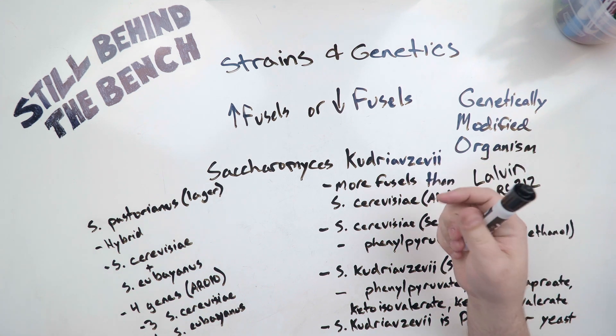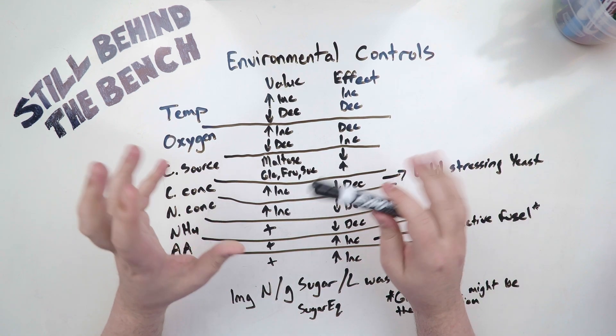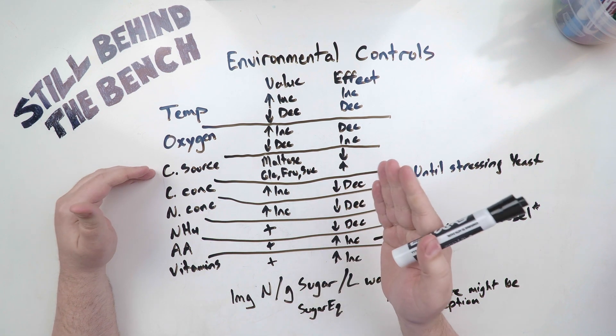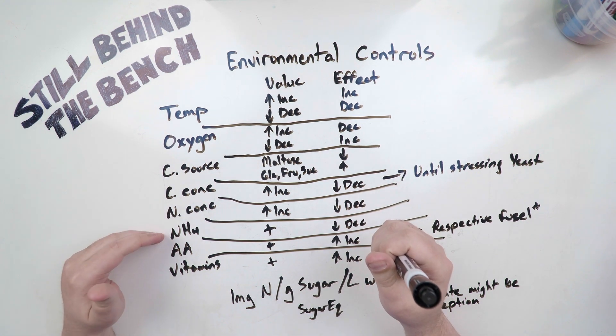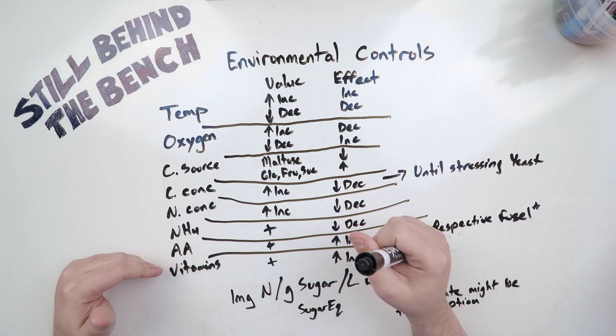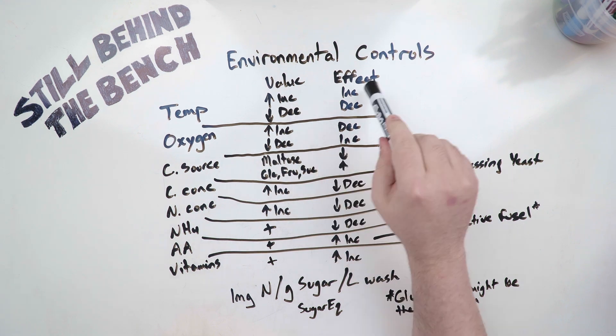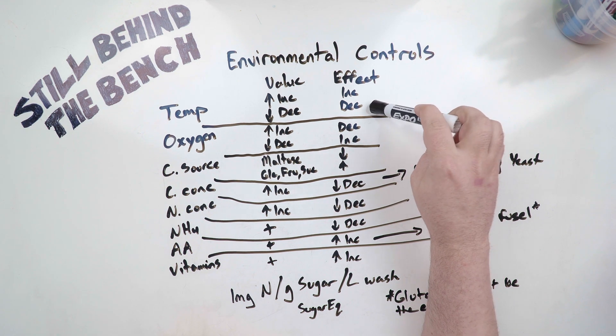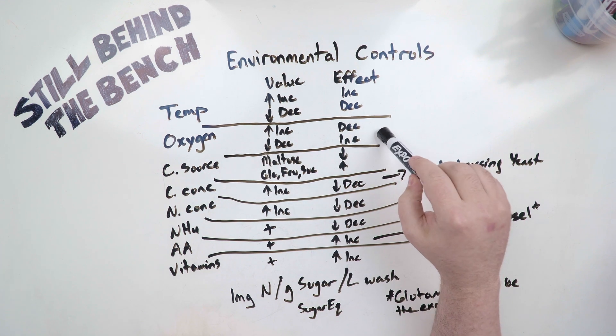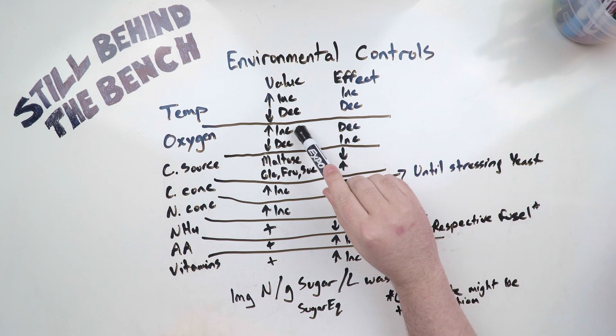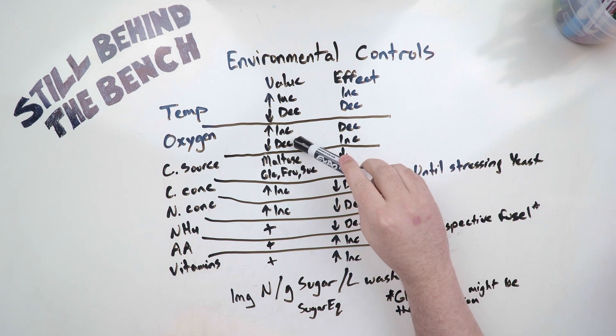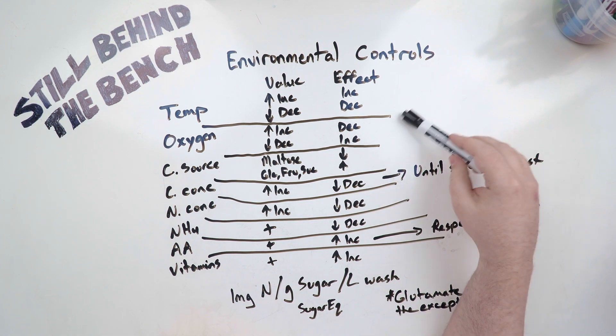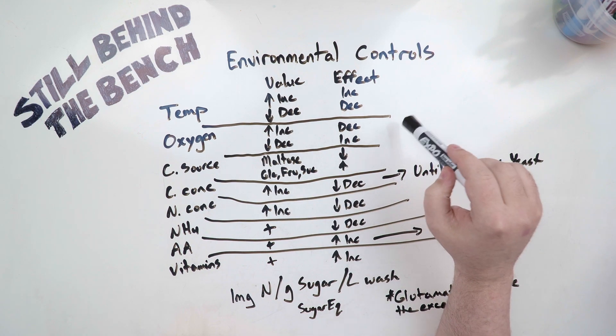So I'm going to show you a table of controllable environmental conditions. Okay, so here we go: environmental controls. Pretty simple. You have temperature, oxygen, carbon source - what type of carbon are we using - carbon concentration, total nitrogen concentration, ammonium which is DAP versus amino acids, and then vitamins. Generally speaking if you increase the temperature you're going to increase the amount of fusel oils being produced. If you decrease the temperature you're going to decrease the amount of fusel oil. With oxygen it's sort of inverse. If you increase the amount of oxygen you're going to decrease the amount of fusel alcohol. If you decrease the amount of oxygen you're going to increase the amount of fusel alcohol. However, if you include fusel aldehydes and fusel acids, all the fusels altogether, if you increase the oxygen you're going to increase the amount of fusels in total.